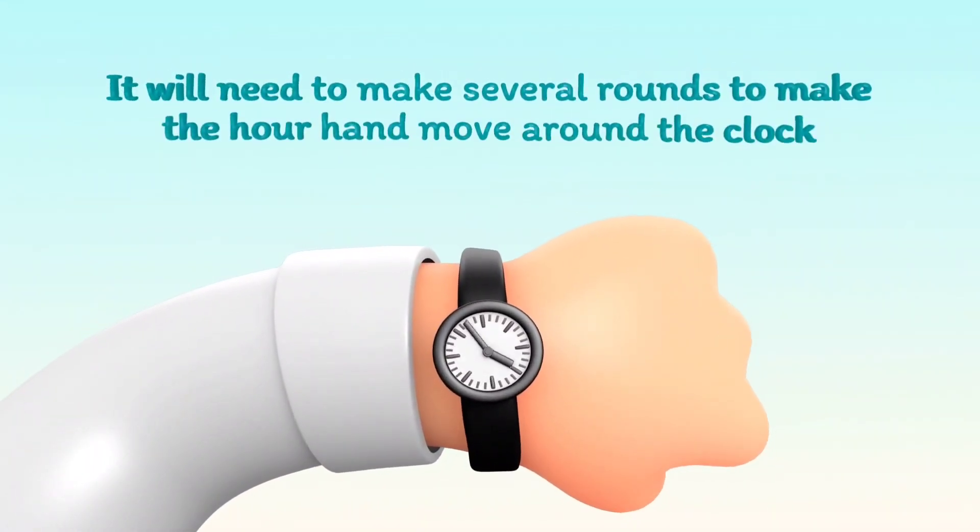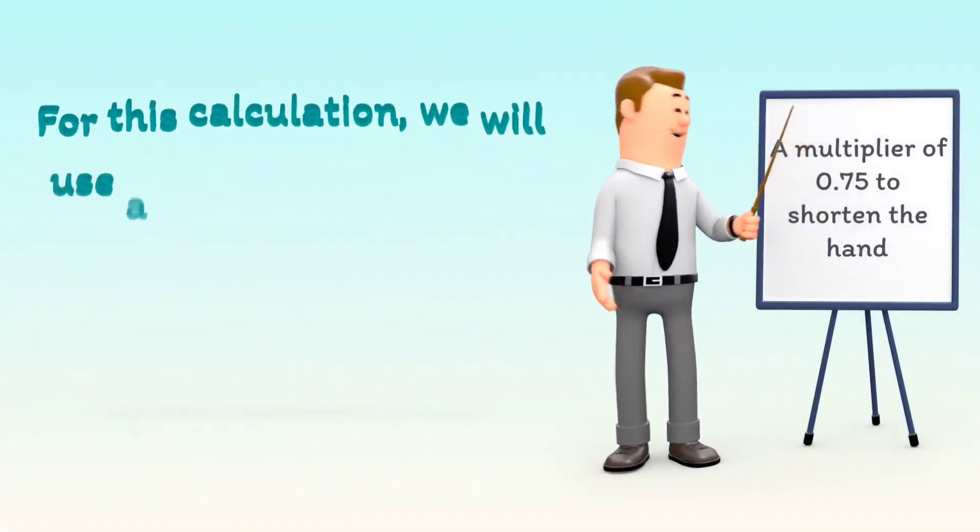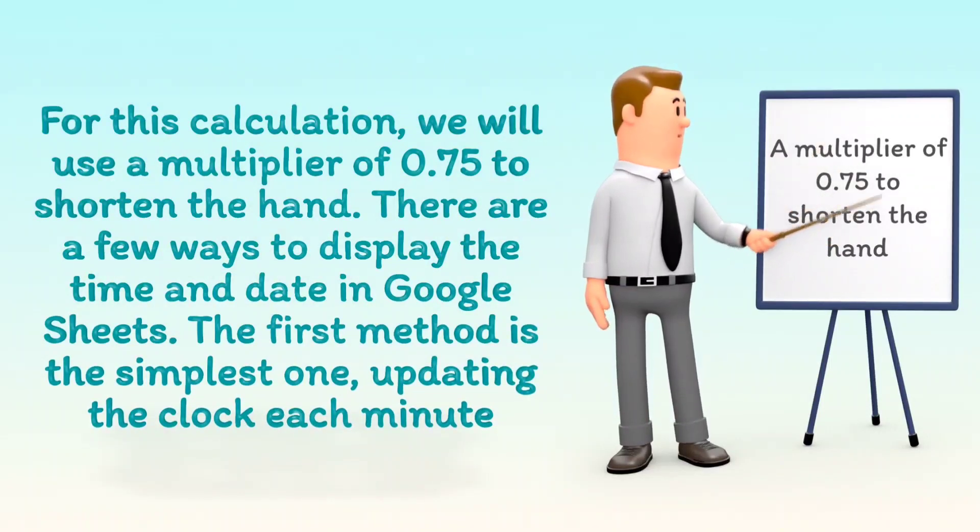It will need to make several rounds to make the hour hand move around the clock. For this calculation, we will use a multiplier of 0.75 to shorten the hand.